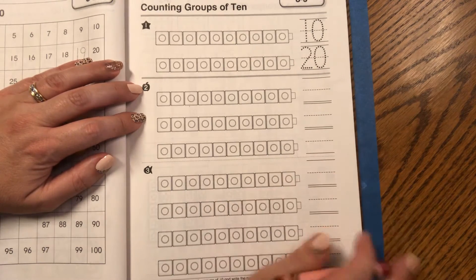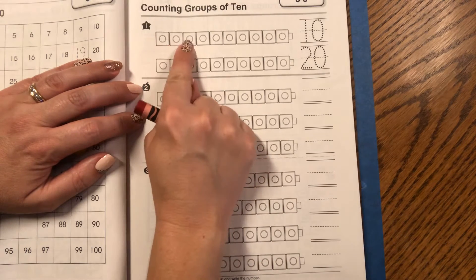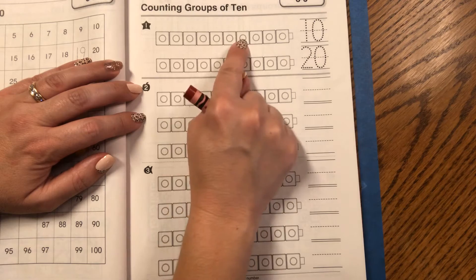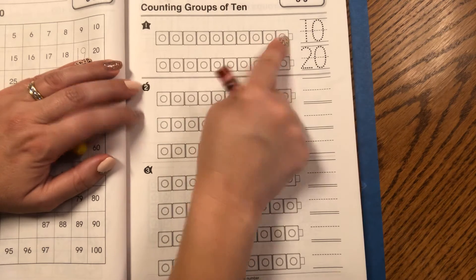Let's first make sure there are 10. 1, 2, 3, 4, 5, 6, 7, 8, 9, 10. Good. It's always good to double check.